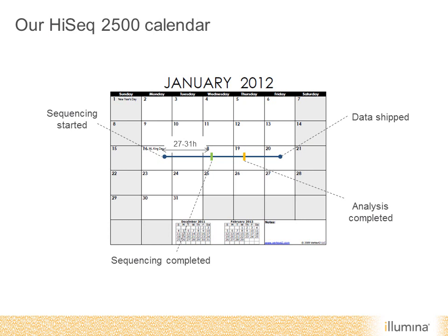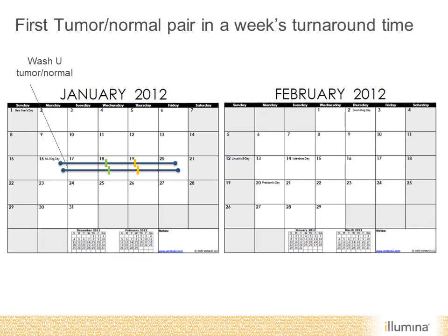In the couple of weeks leading up to AGBT, we used this fast workflow with a variety of different samples. The timeline is depicted as a calendar: the blue bar shows when sequencing started, the green bar when sequencing was completed, the yellow bar when analysis was completed, and the end of the blue line is when we shipped the data. Our first set of experiments used tumor-normal samples from WashU — we started on Monday, sequencing finished Wednesday, analysis finished Thursday, and data was shipped back to WashU on Friday, achieving a turnaround within a week.